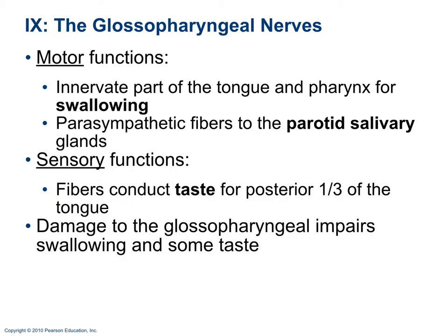Cranial nerve 9 is the glossopharyngeal nerve — both motor and sensory. The motor portion innervates part of the tongue for swallowing and provides parasympathetic fibers to the parotid salivary gland, which secretes salivary amylase for carbohydrate digestion. The sensory portion covers taste to the posterior one-third of the tongue. Damage impairs swallowing and taste.